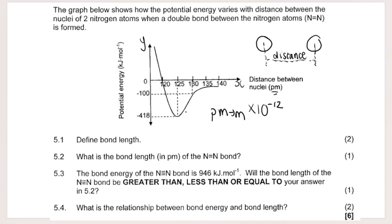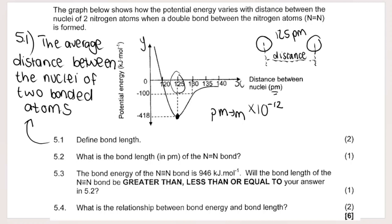When the atoms are at the perfect optimal distance from one another — where the potential energy is at its lowest — this is where a chemical bond occurs. That distance is what we call the bond length, which is 125 picometers for the nitrogen double bond. The definition for bond length is: the average distance between the nuclei of two bonded atoms.